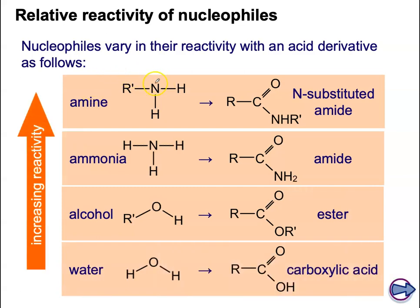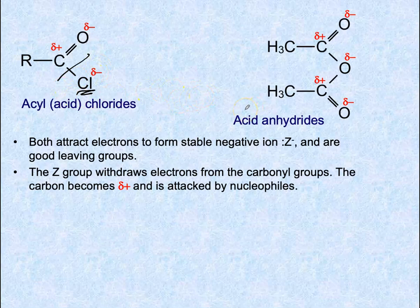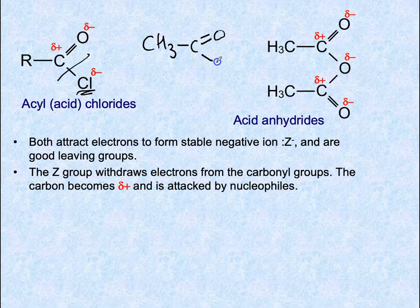You will understand why primary amines are such good nucleophiles later when you study the topic of amines. Now let's look at the difference between acyl chlorides and acid anhydrides. In an acyl chloride you can see there is a Cl attached to the carbonyl group.